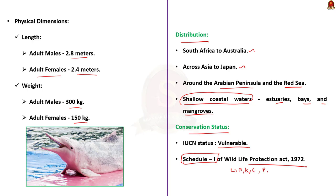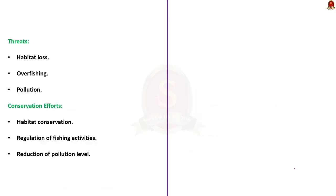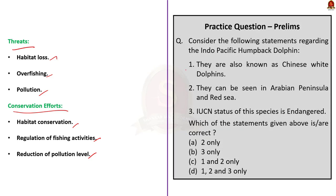The Indo-Pacific Humpback Dolphins are classified as vulnerable on the IUCN Red List. The Indian Wildlife Protection Act 1972 provides the highest level of protection, listing them on Schedule 1, which prohibits hunting, killing, capturing, possession, transportation and sale of any part. The main threats are habitat loss, overfishing and pollution. Conservation efforts include habitat conservation, regulation of fishing activities and reduction of pollution. Statement 3 is incorrect because they are classified as vulnerable, not endangered. The correct answer is option C.